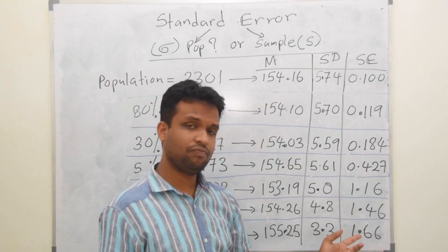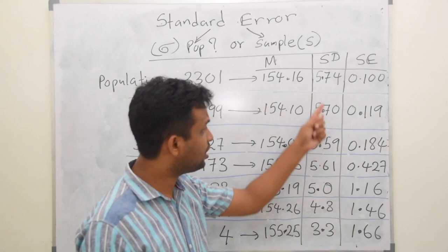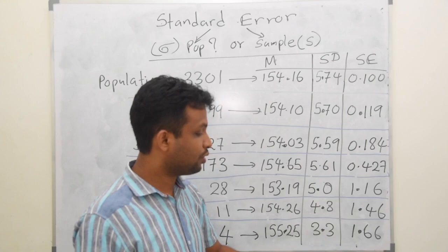Something strange is going on. When I took just 4 individuals, the mean was again almost the same, but the standard deviation is far less than the population value, and the standard error is high. Practically, this may still be enough, but these values are noticeably different.